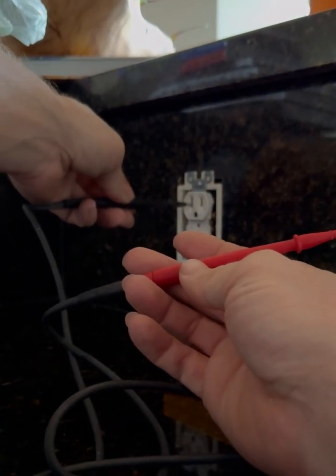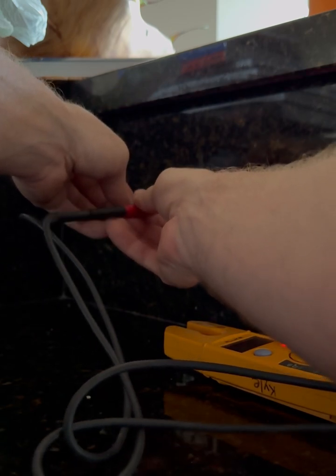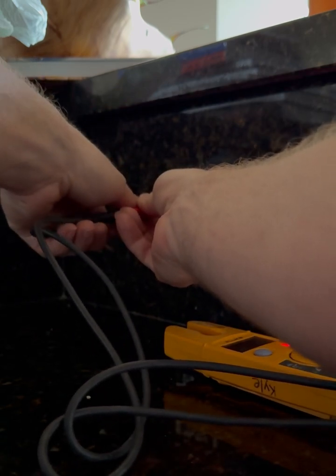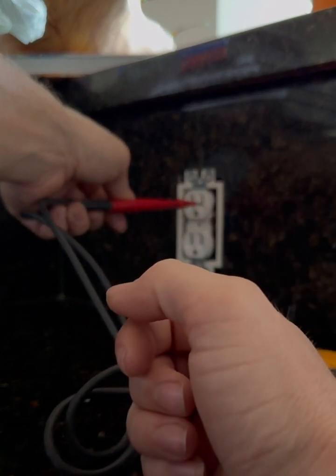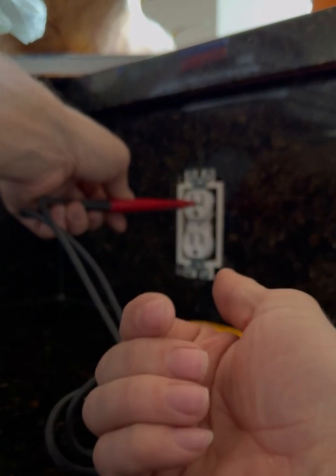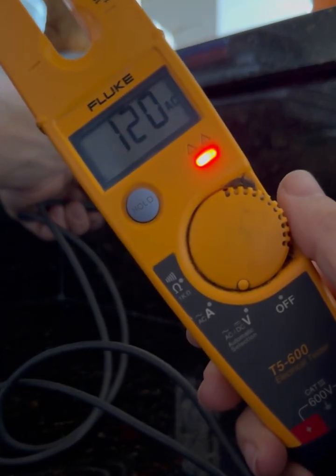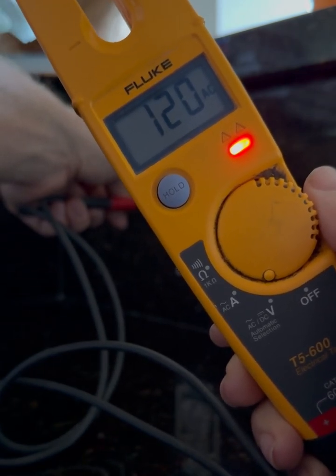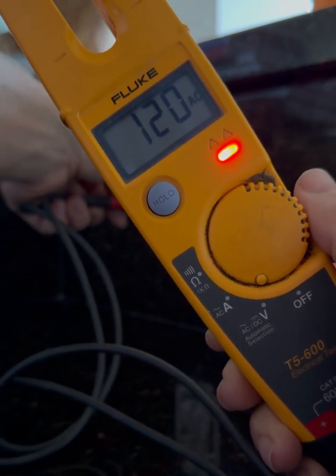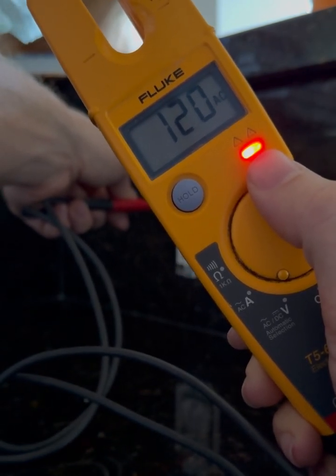So you're going to put your one probe into one side, your red probe into the other side. And then with the meter resting on the ground, obviously if you were testing it at home, you can see the voltage that's indicated on the screen. But for the purpose of the video, I have to show you the screen. So you can see that we have 120 volts being tested from neutral to the hot, which is great. The light is also indicating that there is voltage running through the meter right now.